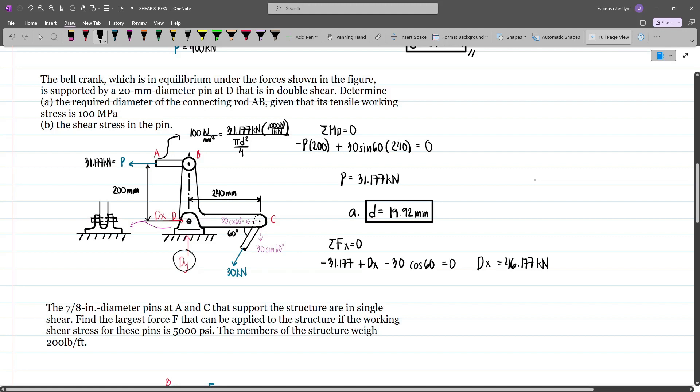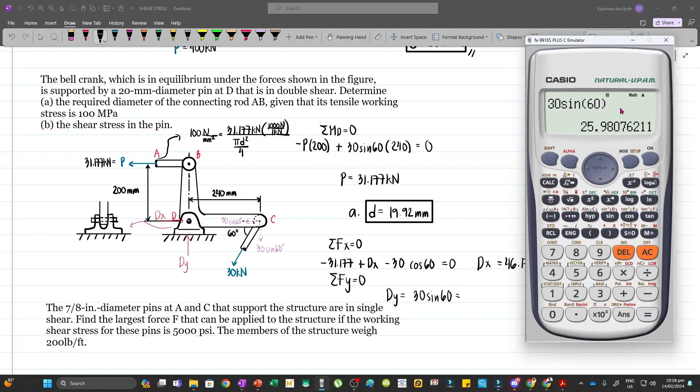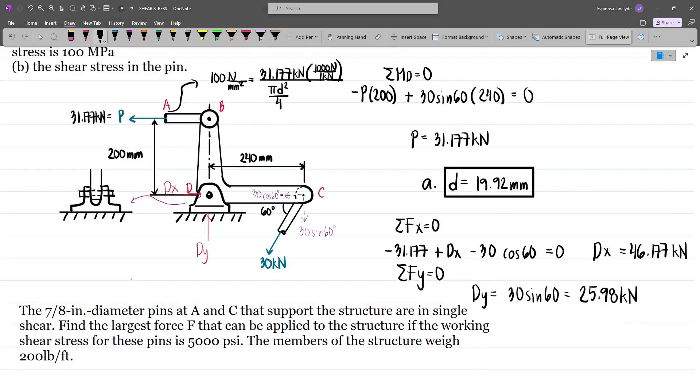For dy, that's just equal to the vertical component of the 30kN load. Summing forces along y, dy equals 30 sin 60, which is 25.98 kN. So this is 25.98 and this is 46.177.